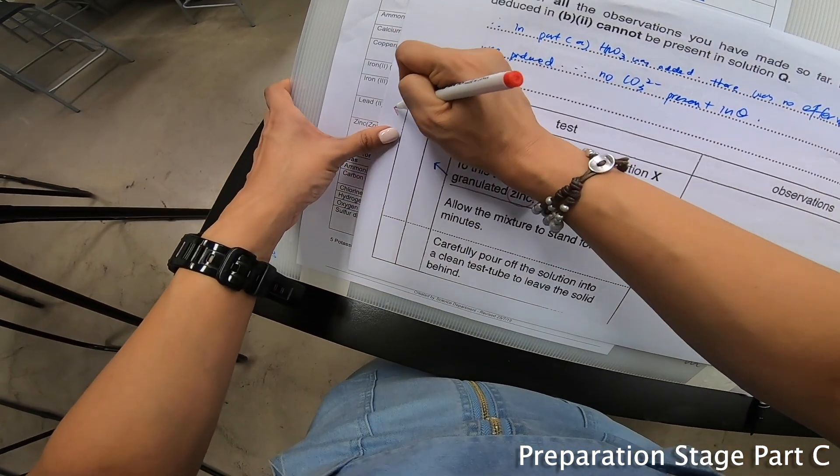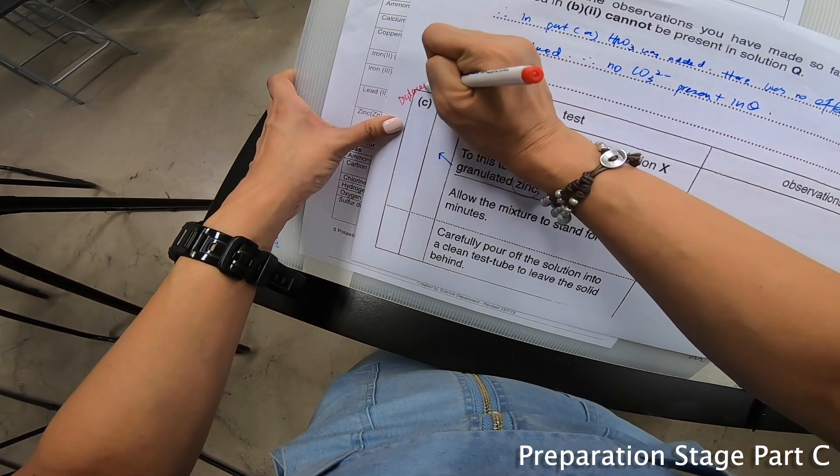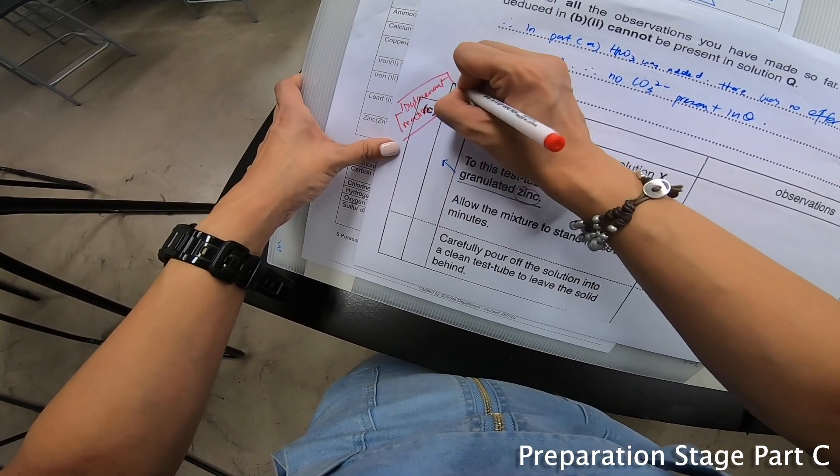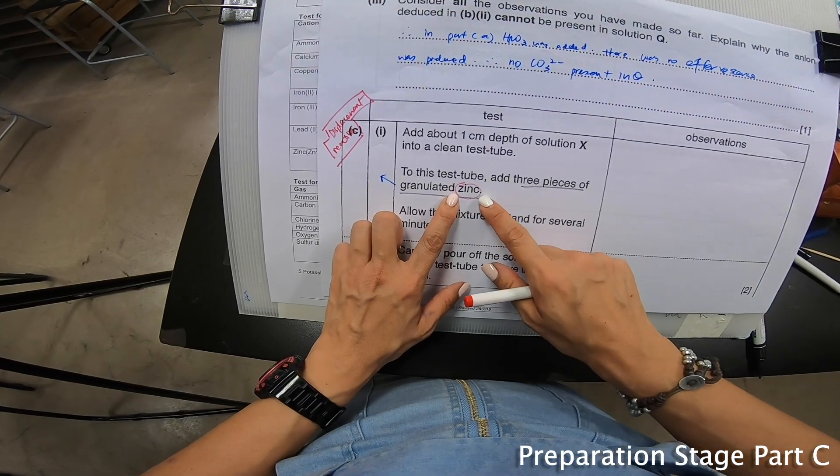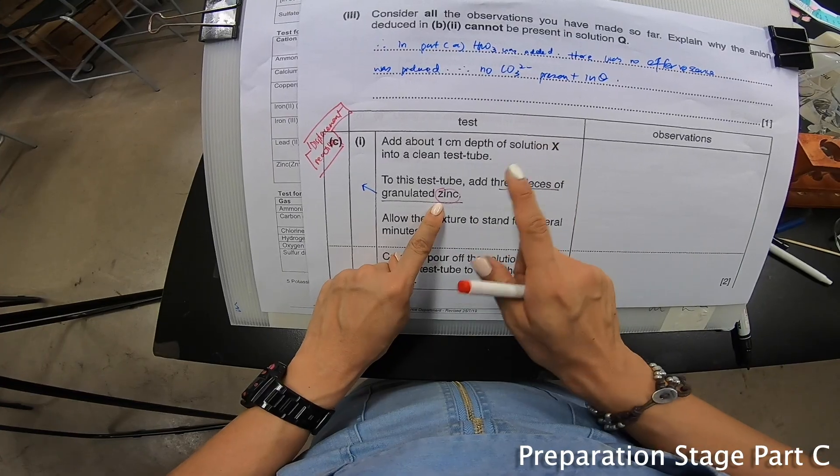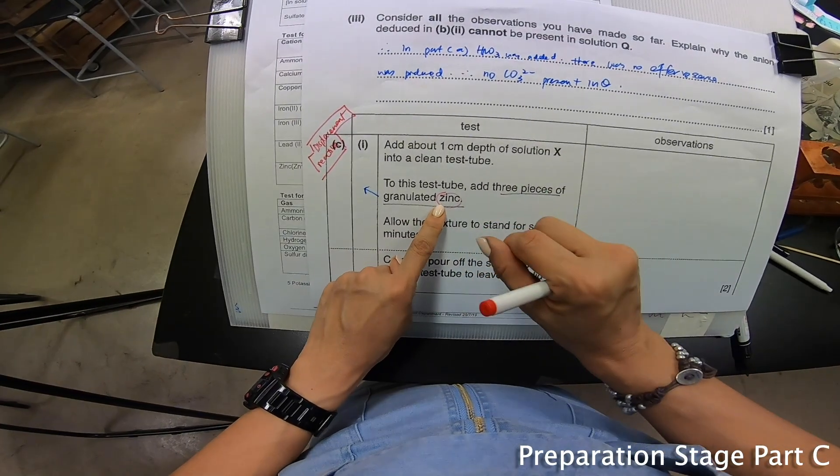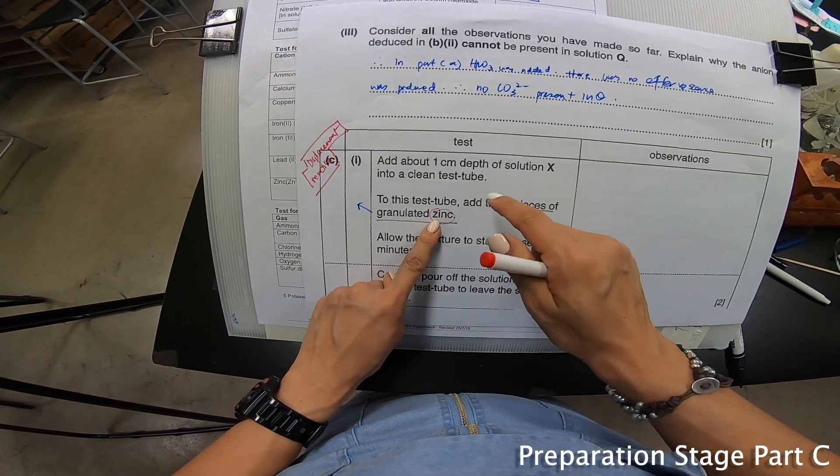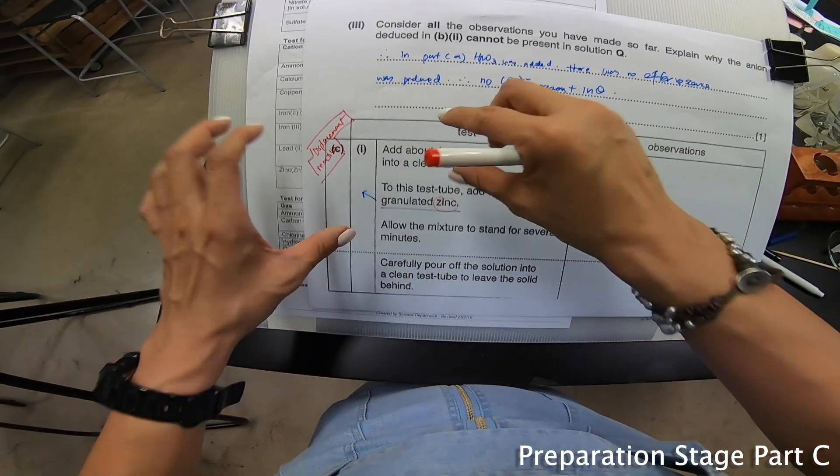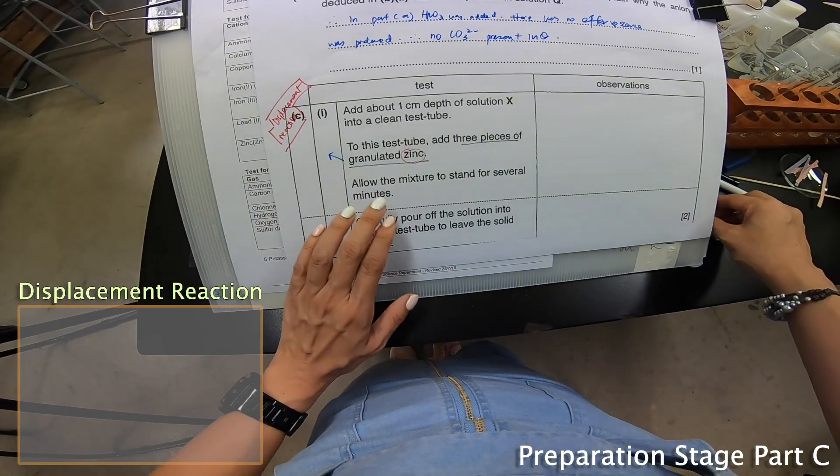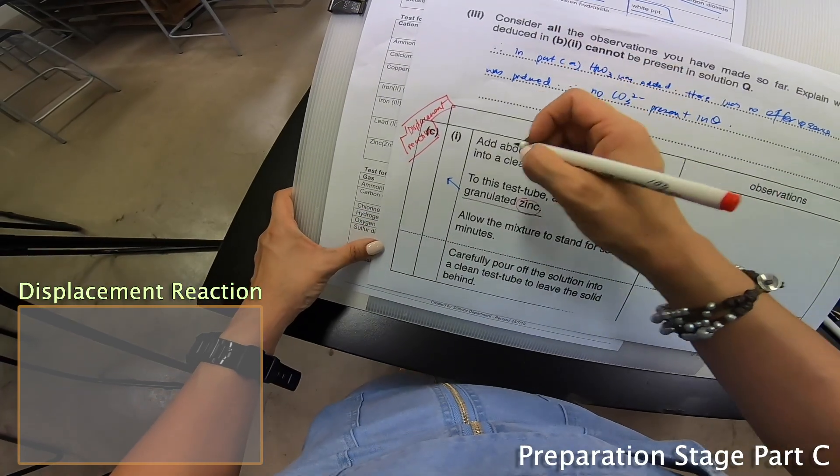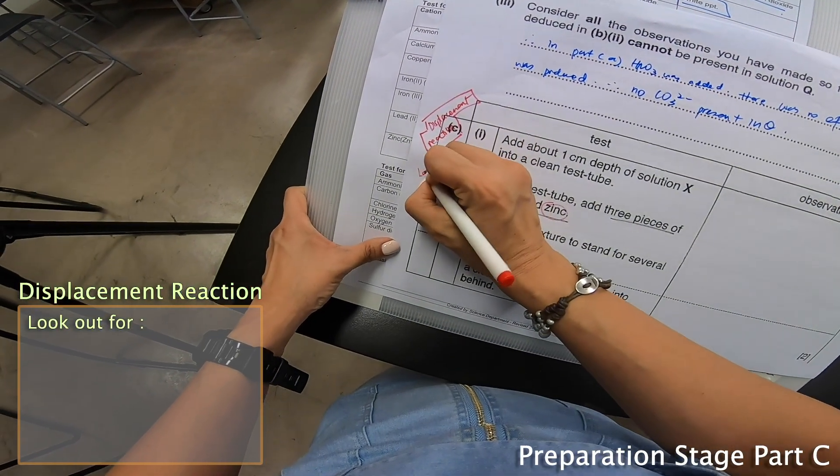Why do I stop here? Please bear in mind that when zinc is added, zinc is a metal. When a metal is added, this is actually a displacement reaction. Sometimes they will add zinc, sometimes magnesium. When a metal is added, it's always a displacement reaction. When displacement occurs, there are a few things you look up for: look up for color change, look up for bubbles.